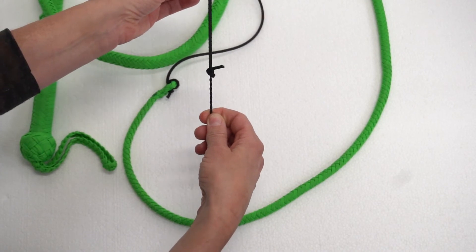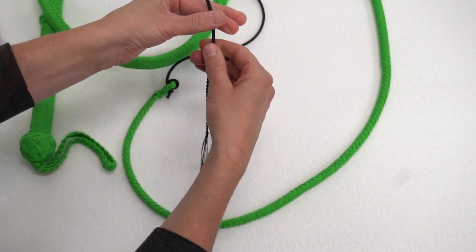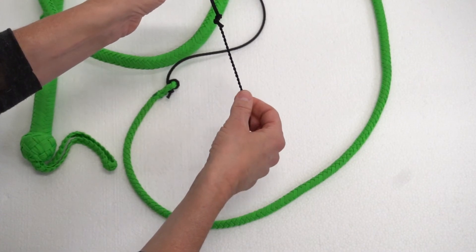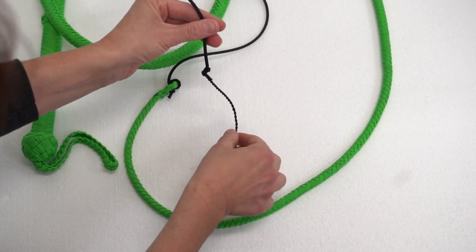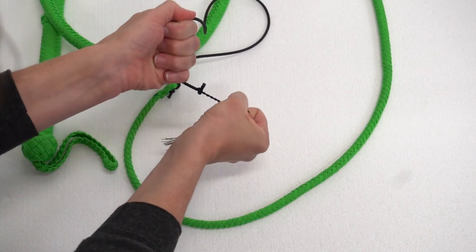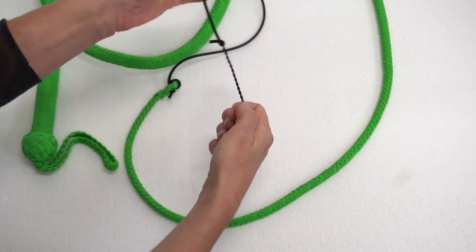Position the cracker where you want it before fully tightening the knot. Once the cracker is fully positioned, give it a nice tight pull. You can even place the cracker on the ground and use your foot to pull the knot tight.